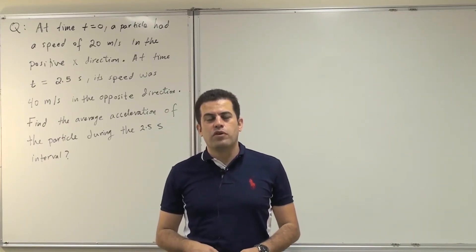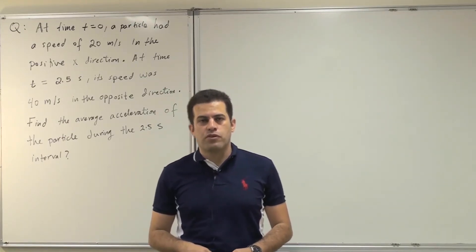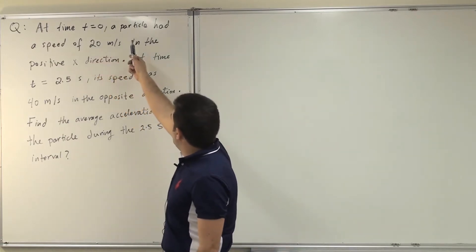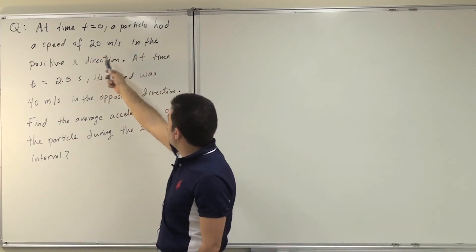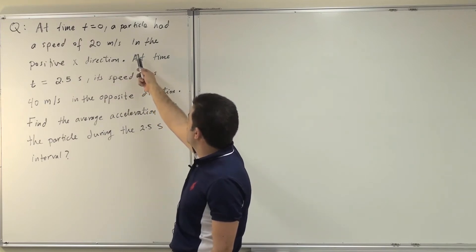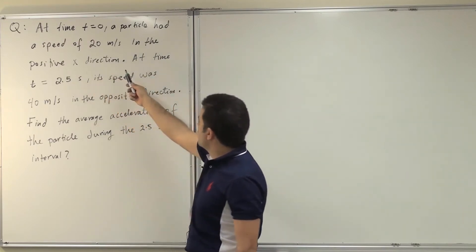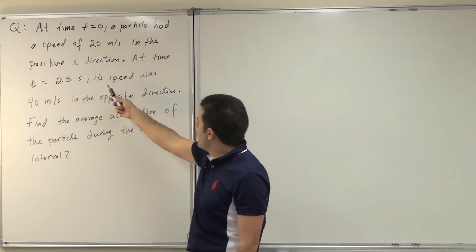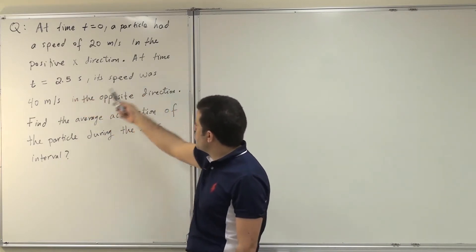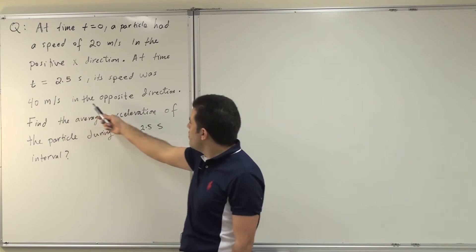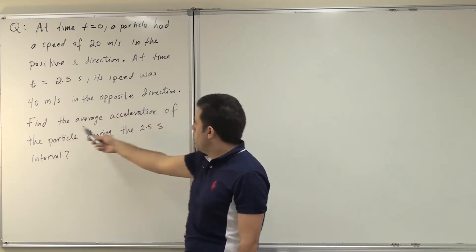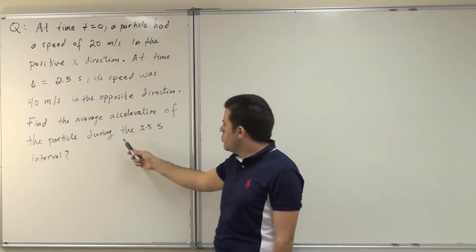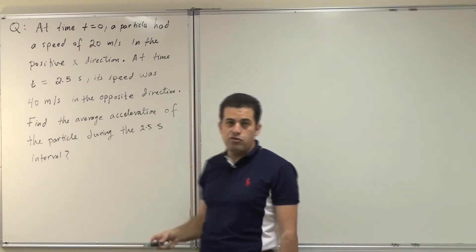As-salamu alaykum. Today we're solving questions from chapter 2. The question reads: at time t equals 0, a particle had a speed of 20 meters per second in the positive x direction. At time t equals 2.5 seconds, its speed was 40 meters per second in the opposite direction. Find the average acceleration of the particle during the 2.5 second interval.